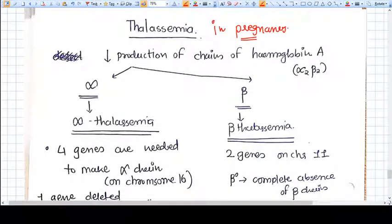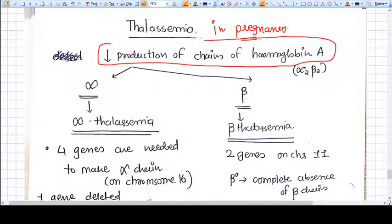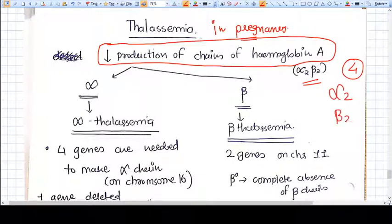What is thalassemia? Thalassemia is basically decreased production of chains of hemoglobin A, that means hemoglobin adult. Hemoglobin adult has total four chains: two alpha chains and two beta chains.